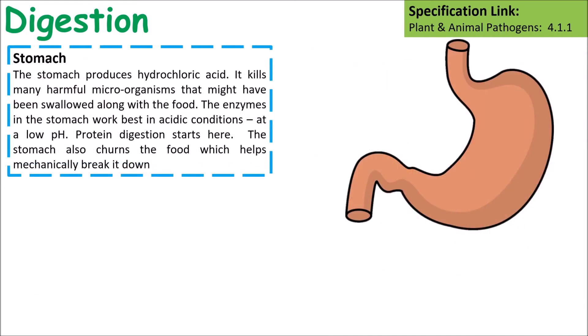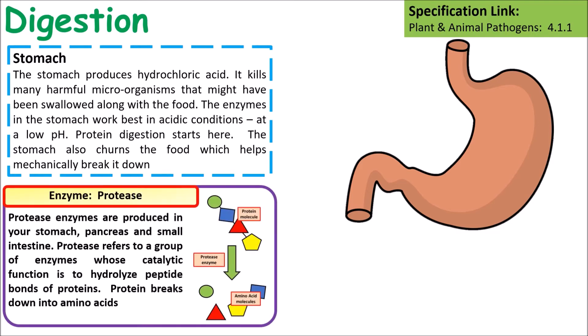After the esophagus the food enters the stomach, which produces hydrochloric acid, other gastric juices, and the enzyme pepsin. The stomach churns food up, breaking it down further. Pepsin is a protease that breaks down proteins into amino acids. The optimum pH for pepsin is around pH 1, which is why stomach acid is secreted into the stomach.